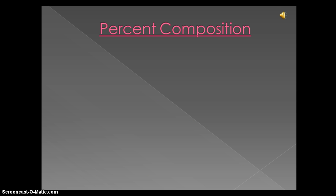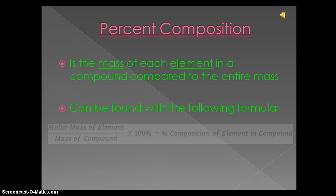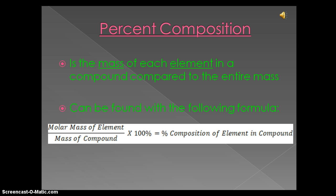Percent composition. Remember, the percent composition is the mass of each element in a compound compared to the entire mass. This can be found with the following formula. We would take the molar mass of each element and divide it by the mass of the compound, and multiply that times 100%. This will equal the percent composition in each compound. Note, the sum of the percents should always equal 100.